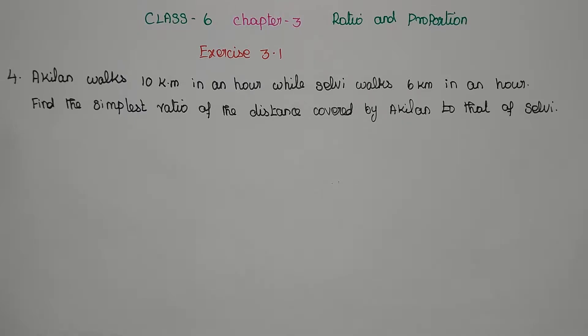Aguilan walks 10 km in an hour, while Selvi walks 6 km in an hour. Find the simplest ratio of the distance covered by Aguilan to that of Selvi.